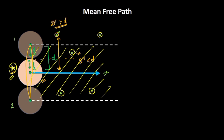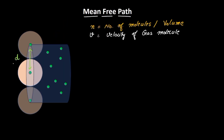After deriving the formula, we will also add a component that will apply to all cases even when the molecules are moving, as happens in real life. Now that we know d is the diameter of the cylinder, let's define some other terms. Let n be the number of molecules per unit volume and V be the velocity with which this gas molecule is moving. The gas molecule travels from one point to another in time delta t, so that particular distance equals V times delta t.